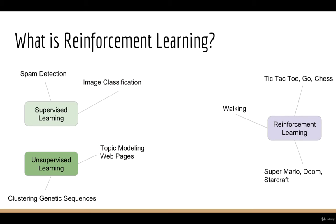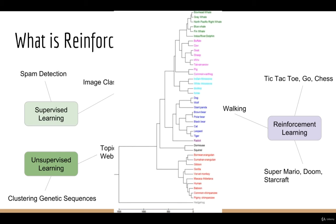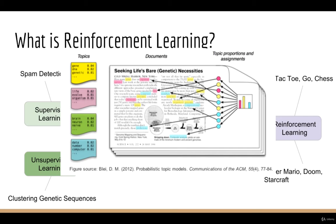You can imagine how image classification might be useful for a self-driving car. How about unsupervised learning? Some examples of that might be clustering genetic sequences, so you can determine the ancestry of different families or different types of animals. Another example is topic modeling: given a set of documents, you can determine which documents discuss the same or similar topics. With the amount of data on the internet growing every day, hand labeling everything would be an infeasible task. Unsupervised learning is very useful in this case.